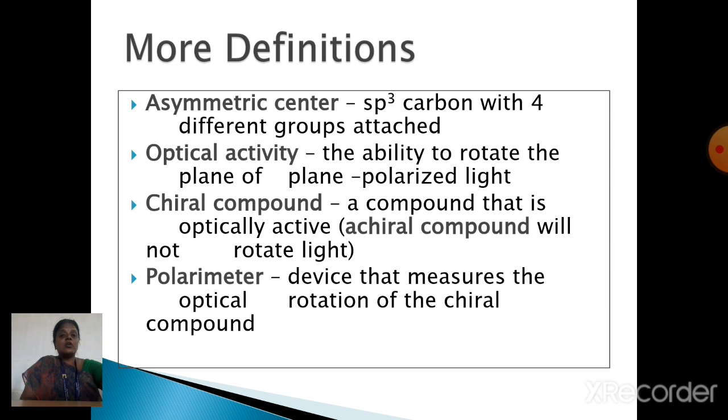The next one is the chiral compound. The chiral compound means the compound which is optically active will be called as the chiral compound. Next one is the polarimeter. The polarimeter is a device that is used to measure the optical rotation of the chiral compounds.